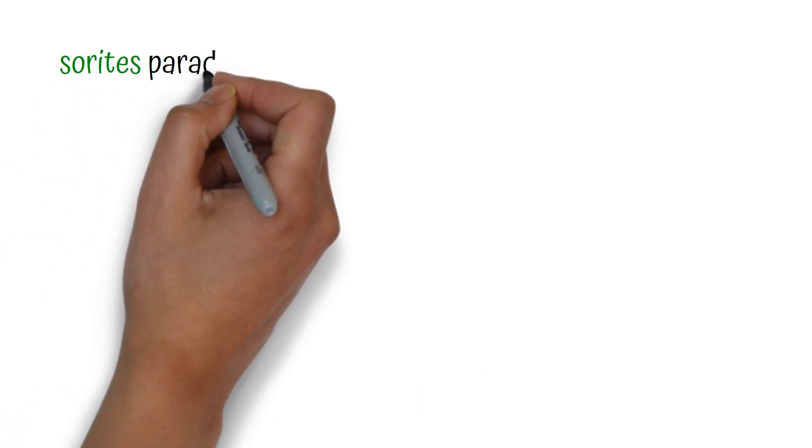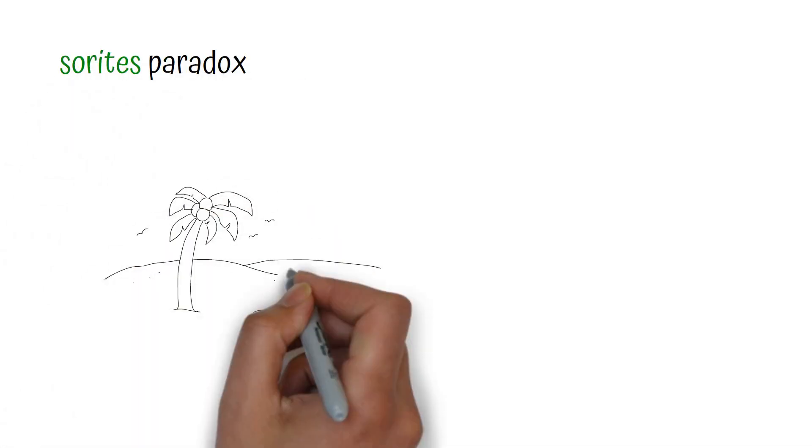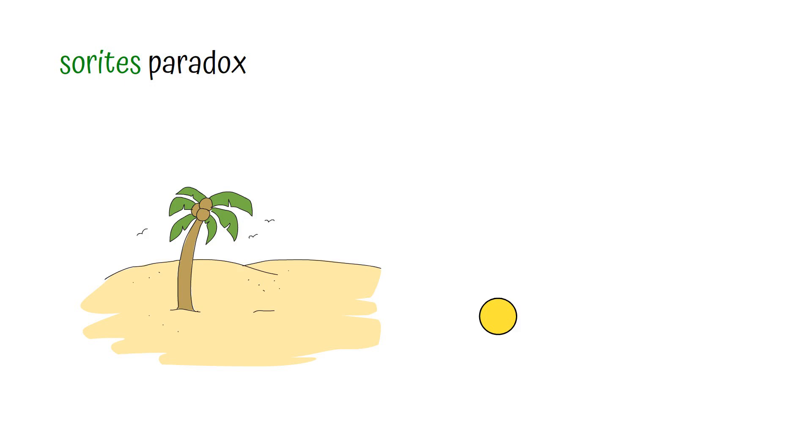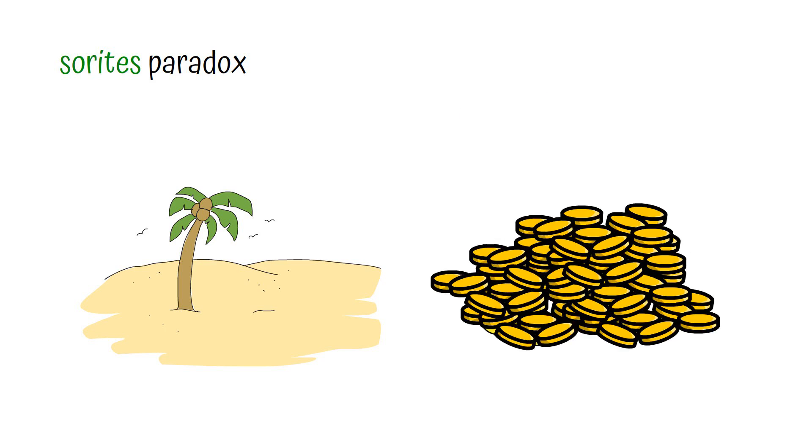Wait, you might say, we're running into a sorites paradox here. Imagine you have a grain of sand. Now add another. Congratulations, you have two grains of sand. Add another. Now you have three. Keep going. At what point would we call this a heap of sand?